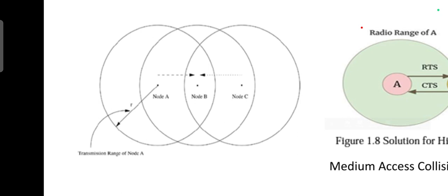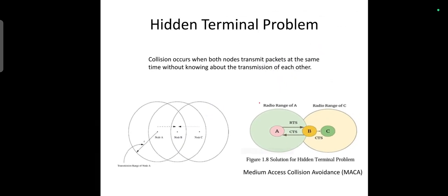At the same time, when these two nodes initiate a transmission to node B, the packets will collide with each other. This problem is known as hidden terminal problem because one node is hidden from the other.